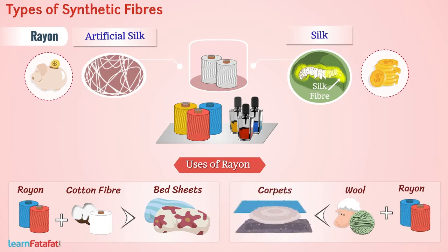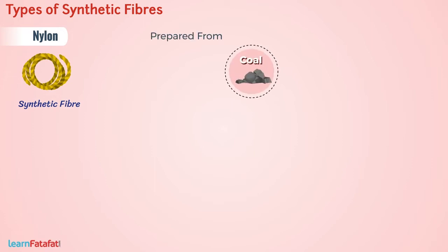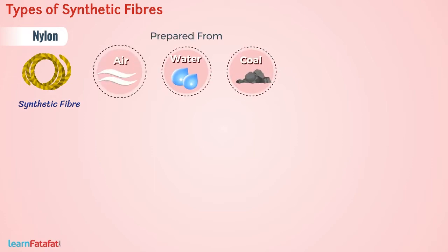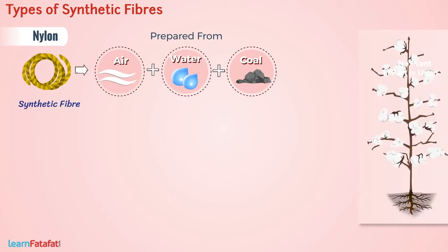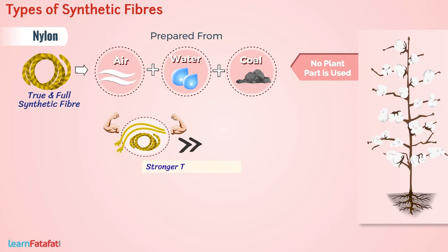Next, we will speak about nylon. It is also a synthetic fiber. It was prepared from coal, water and air without using any plant part, which makes it the first true and full synthetic fiber. Nylon thread is known for its strength. You will be surprised to know that a nylon thread is stronger than a steel wire.